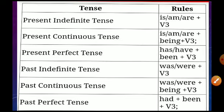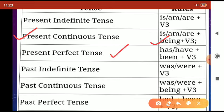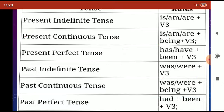For present indefinite tense, the passive uses 'is/am/are' plus the third form of the verb. For present continuous, it is 'is/am/are being' plus the third form of the verb. For present perfect, we use 'has/have been' plus the third form of the verb. For past indefinite tense, we use 'was/were' plus the third form of the verb. For past continuous tense, we use 'was/were being' plus the third form of the verb. For past perfect tense, we use 'had been' plus the third form of the verb.